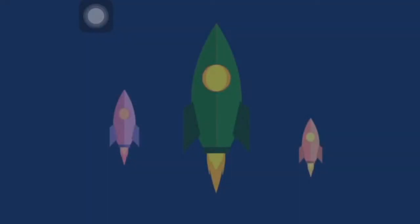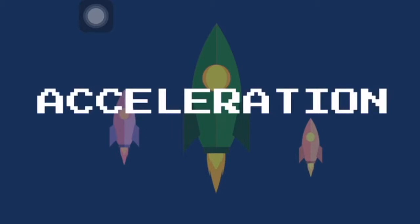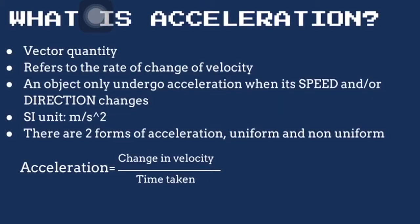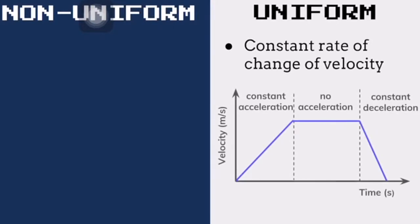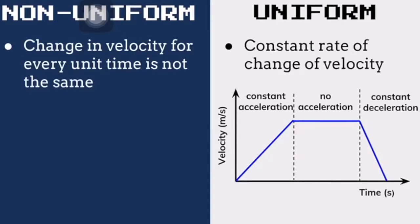We will now talk about acceleration, which is a vector quantity. Although it refers to the rate of change of velocity, speed can also be used to calculate acceleration. An object undergoes acceleration when its speed or direction changes. The SI unit of acceleration is meters per second squared. An object experiences uniform acceleration when the change in velocity for every unit time is the same — for example, when velocity increases by 10 meters per second every second.